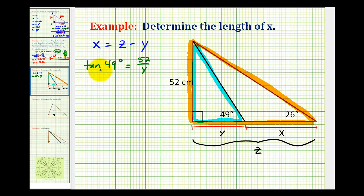Now to solve for y, let's go ahead and make this a fraction, and then cross multiply. y times tangent forty-nine degrees equals fifty-two. And we'll divide both sides by tangent forty-nine degrees.